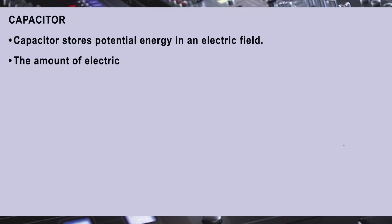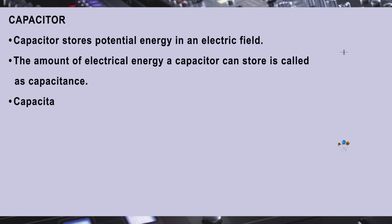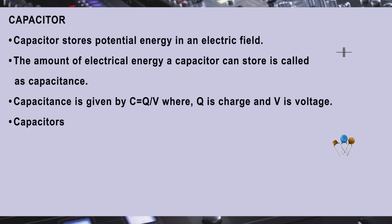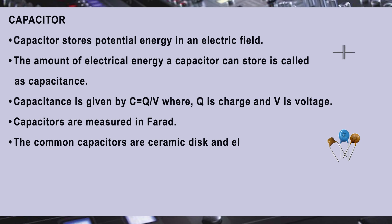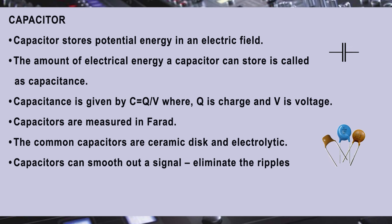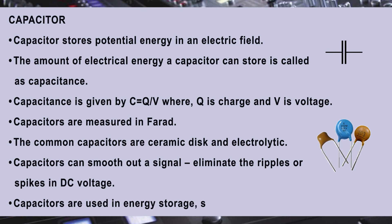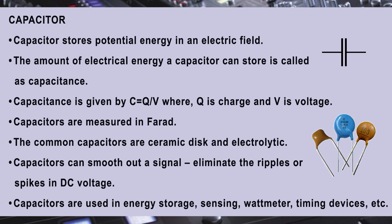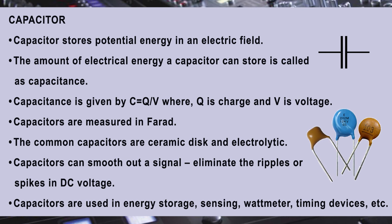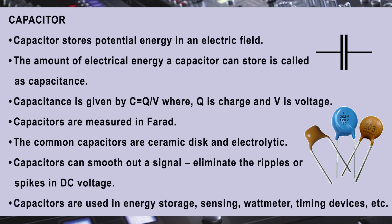Capacitor. A capacitor stores potential energy in an electric field. The amount of electrical energy a capacitor can store is called capacitance. The capacitance is given by C = Q / V, that is, capacitance is equal to charge divided by voltage. Capacitors are measured in Farads. The common types are ceramic disc and electrolytic. Capacitors can smooth out a signal and eliminate ripples or spikes in DC voltage. They are used in energy storage, sensing, watt meters, timing devices, etc.